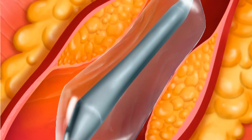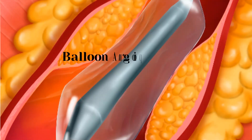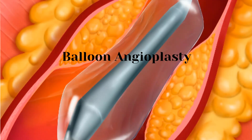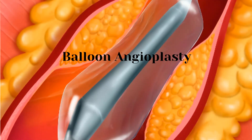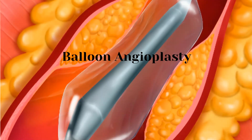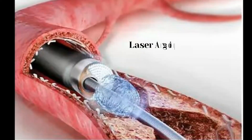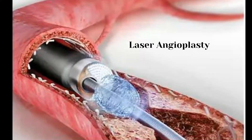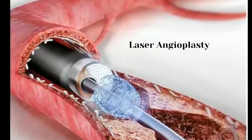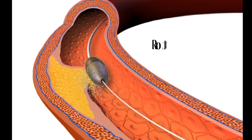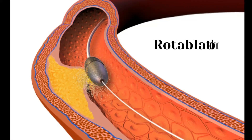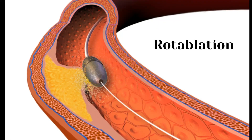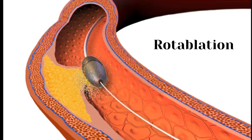PCI types include: balloon angioplasty, where a balloon is inserted and inflated in your artery to press plaque out of the way; laser angioplasty, where a laser is inserted on the end of a catheter and vaporizes plaque; and rotational atherectomy, where a special drill is inserted into the artery to remove calcium deposits.